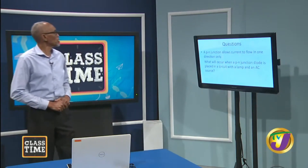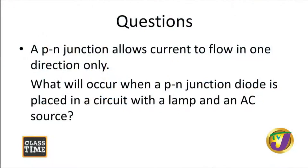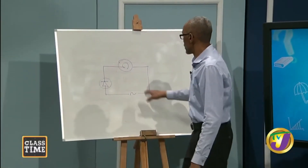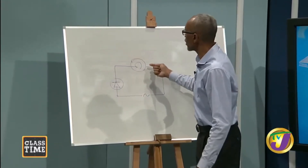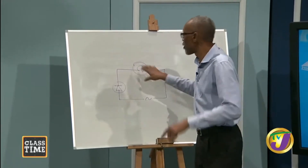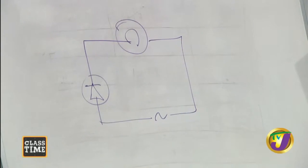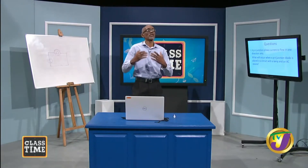Here is another question: a PN junction allows current to flow in one direction only. What will occur when a PN junction diode is placed in a circuit with a lamp and an AC source? Remember from the last lesson that an AC current changes direction periodically. So for one period of time it's going one way, and the diode will be conducting — the lamp will light. When the current reverses, the diode will be in reverse bias — there will be no current and the lamp will go out. So the lamp will light, go out, light, go out as the current changes direction. As the AC current changes direction, the lamp will light and go out because the diode will go from forward bias to reverse bias — this is AC rectification.